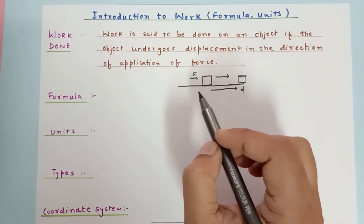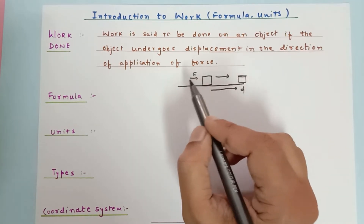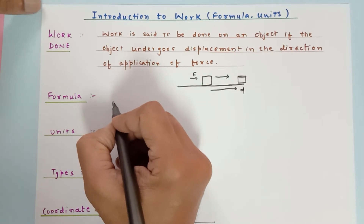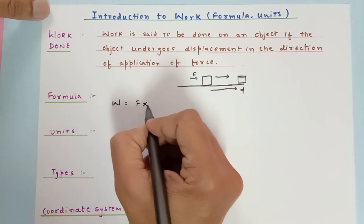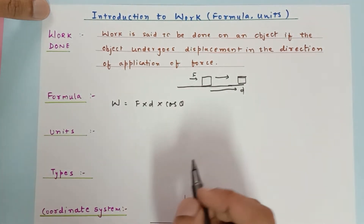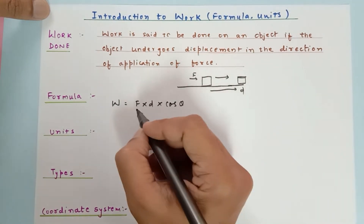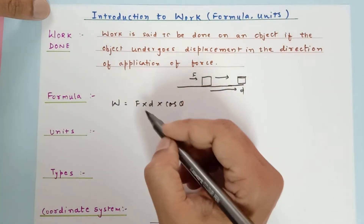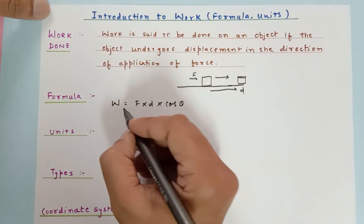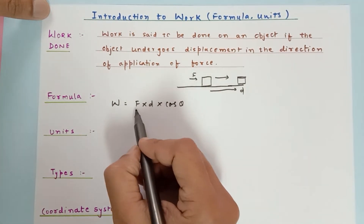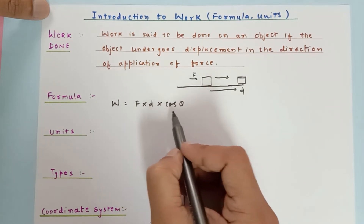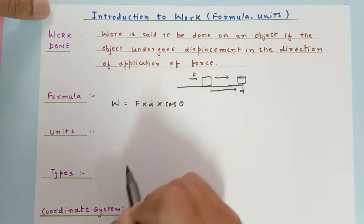In physics, if there is no displacement on the application of force, there is no work done. The formula for work done is W = F × d × cosθ, where θ is the angle between F and d. F is the force applied, d is the displacement of the body, and cosθ where θ is the angle between F and d.